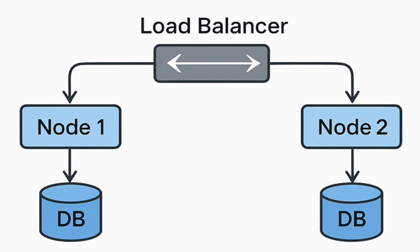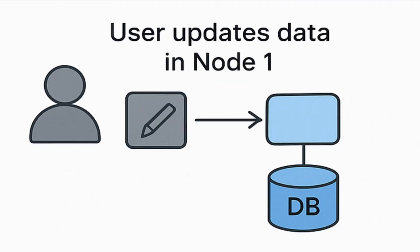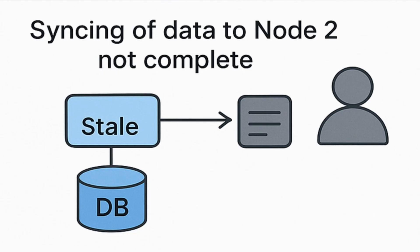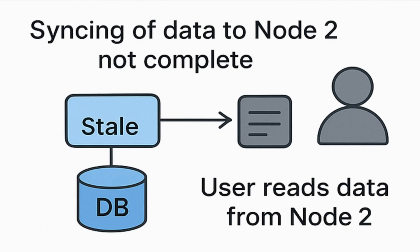Imagine you write an update to node 1, and that change takes time to get synced to node 2 due to replication lag. Then node 1 and node 2 will temporarily have different and inconsistent versions of the same data. At this moment, if some user requests the data and is served from node 2, there is a high chance that user will be served with outdated data. So, how can this problem be handled?